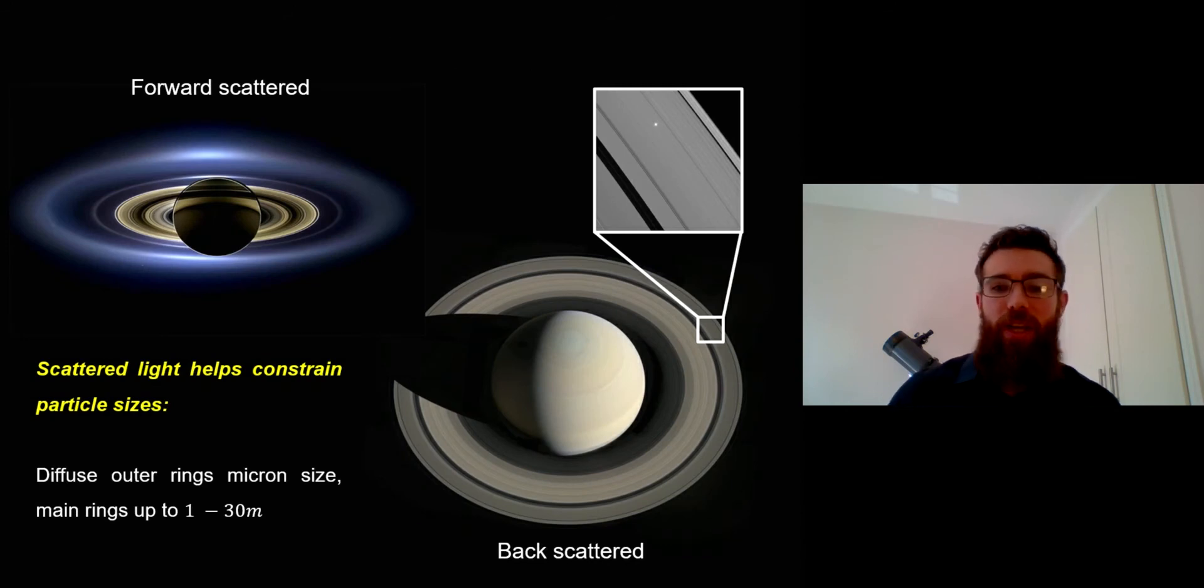Now the rings are made up of a variety of different sizes of particles, from the size of a house all the way down to micron size - very, very small particles. But how do we know that? We can't just go and measure them with a ruler. So one way we can actually work out the size of these particles is by looking at the way that the light is scattered off these ring systems.